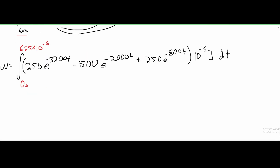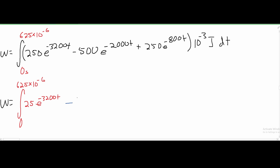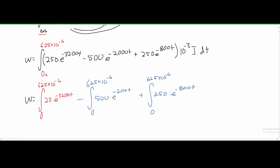To solve this I'm going to break the integral into parts. So we have w equal to the integral from 0 to 625×10⁻⁶ of 250e^(−3200t), minus the integral from 0 to 625×10⁻⁶ of 500e^(−2000t), plus the integral from 0 to 625×10⁻⁶ of 250e^(−800t), all multiplied by 10⁻³ joules, dt.